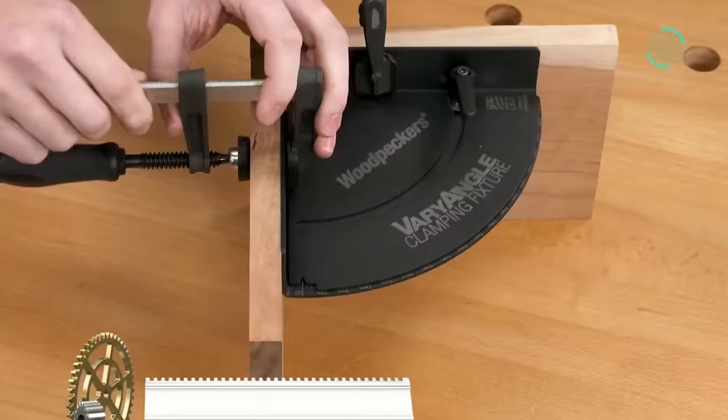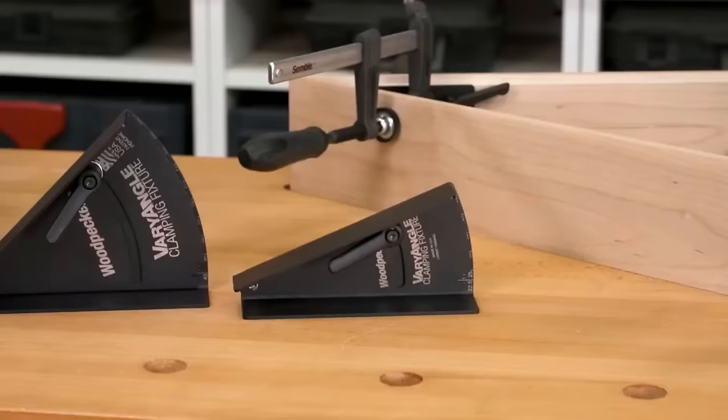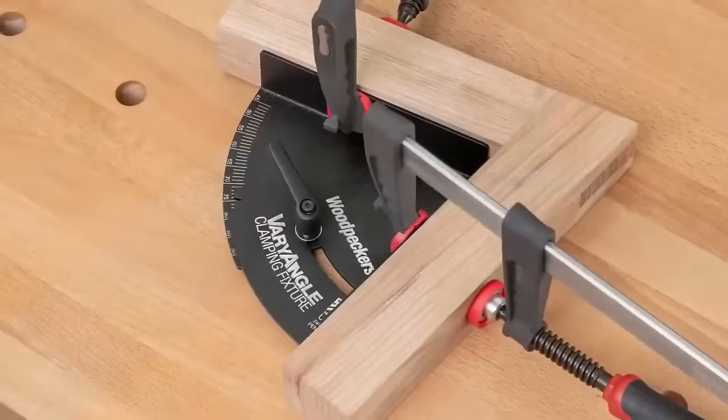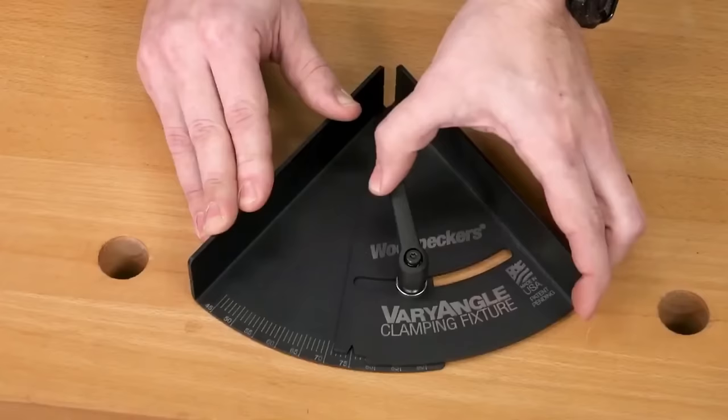Woodpecker's Variangle Clamping Fixture. Woodpecker's new variangle clamping fixtures take the great features of their famous clamping squares, and add the flexibility to clamp angles other than 90 degrees. They created three different angle ranges and two different sizes of the variangle to give you a full clamping range from 22.5 degrees to 180 degrees. Now you can tackle any angle joinery project.